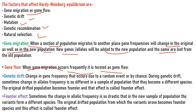Genetic drift is the change in gene frequency that occurs through random events or by chance. Sometimes the allele frequency change is so drastic in a sample of population that they become different species. The original drifted population becomes a founder and that effect is called the founder effect. It is the random change in allele number and frequency in a gene pool due to chance in a small-sized population. It is caused by sampling error in the gene pool sample used to form the next generation. The sampling gene pool is generally small in size, variability is also limited, and it leads to fixation of certain alleles and elimination of others.